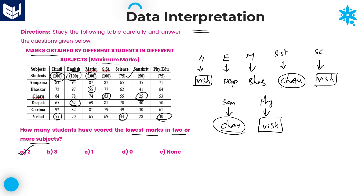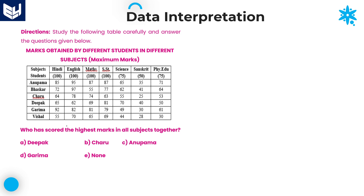Let us look at the next question. The information is the same — no need to re-read. Just go with the solution directly. Read the question and calculate the answer accordingly. Question: who has scored the highest marks in all subjects together? To calculate this, you need to verify each and every person's total value. You can calculate individually who is the highest.